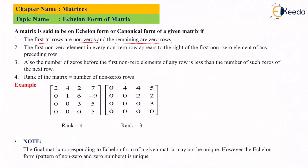In this first matrix, all rows are non-zero. What is a non-zero row? Any row of a matrix which has at least one non-zero element is called a non-zero row of a matrix. Here in all rows, you will find at least one non-zero element.